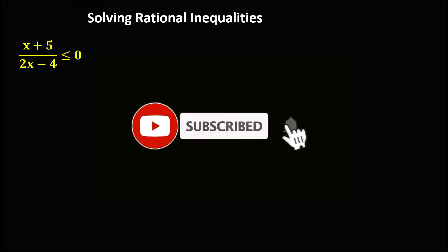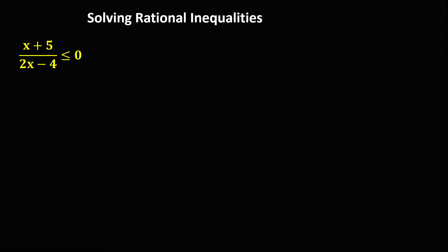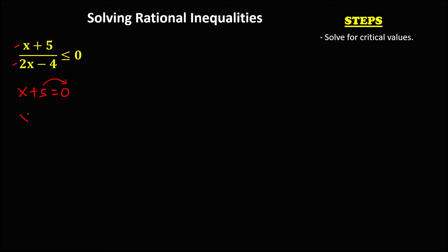Let's solve this problem by finding the solution set of these rational inequalities using different steps. First, we need to find the critical values by equating the numerator and denominator to zero. For the numerator, x plus 5 equals zero. Transposing positive 5, x equals negative 5. This is the first critical value.